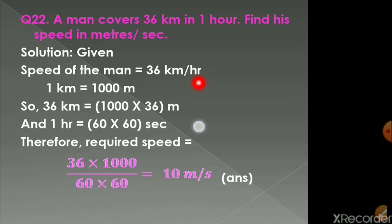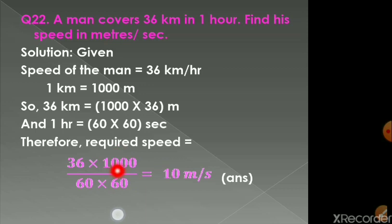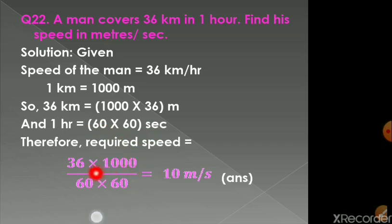So 36 km/hour is written as (36 × 1000) ÷ (60 × 60). The 36,000 in the numerator and 3,600 in the denominator — cancelling zeros and simplifying: 36 ÷ 36 = 1, giving 10 meters per second. The answer is 10 m/s.